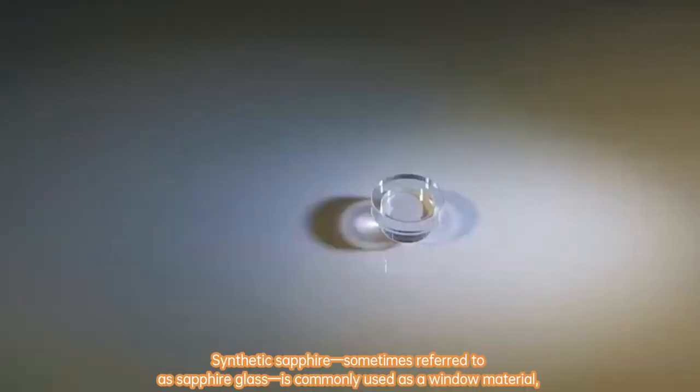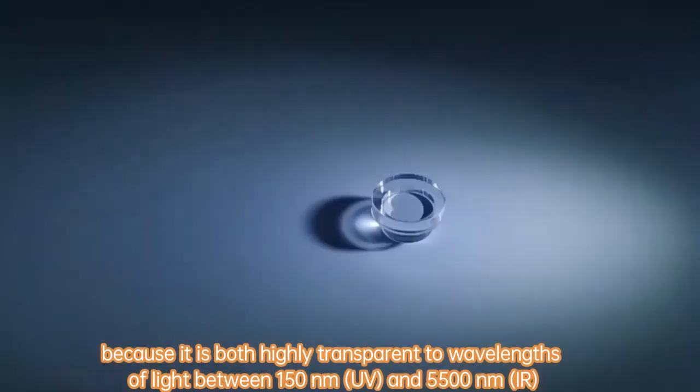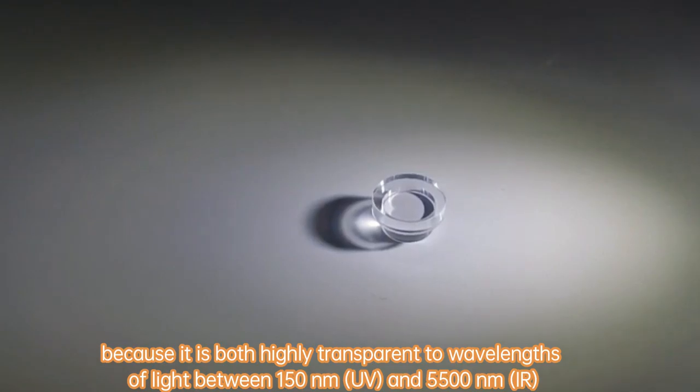Sapphire crystal. Synthetic sapphire, sometimes referred to as sapphire glass, is commonly used as a window material because it is highly transparent to wavelengths of light between 150 nm UV and 5500 nm IR.